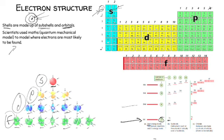The second energy level — the second row of the periodic table, starting with lithium — is larger, so it fits two sub-shells: an S and a P sub-shell. The S sub-shell holds two electrons. The P sub-shell has three orbitals each holding two electrons, giving six electrons total in the P sub-shell. That gives us a total of eight electrons available on the second energy level.